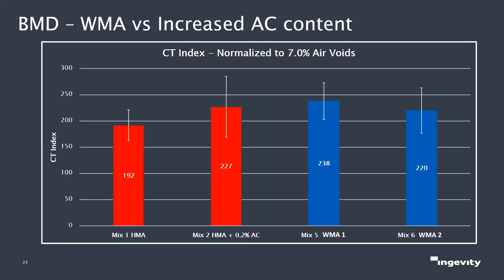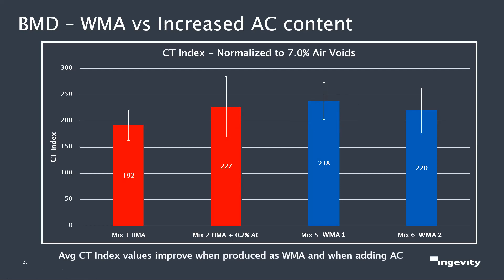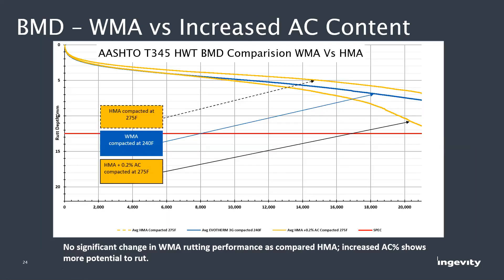We then looked at taking a mix design and running it warm versus hot, plus two percent AC, to see how they do on CT index. This is a Texas mix at 7 percent air voids — an SMA-type mix. The hot mix on its own had a CT index of 192, and adding AC bumped it up. But two warm mix technologies — even with the same AC content — performed at the level of the added-AC hot mix. The more resilient binder, not damaged as much in the plant, performs better on these tests and will also age better.